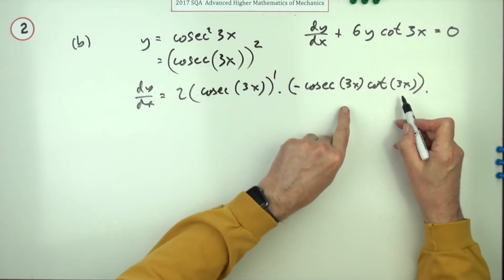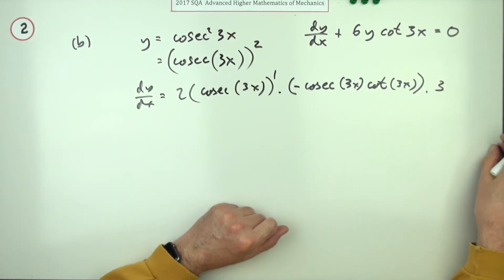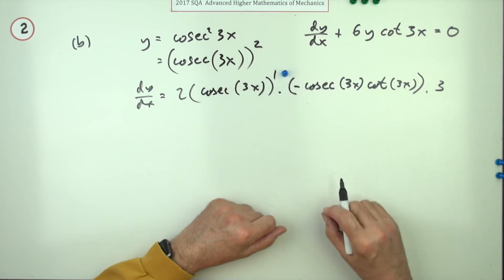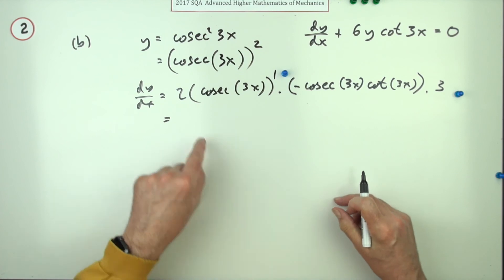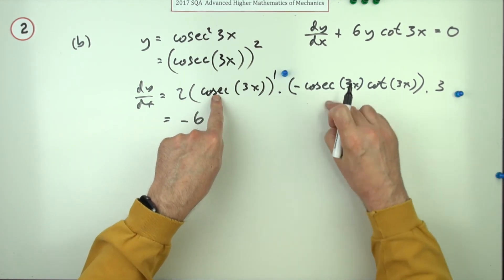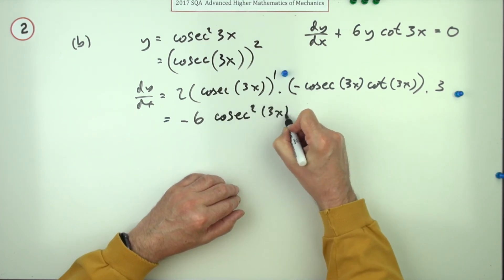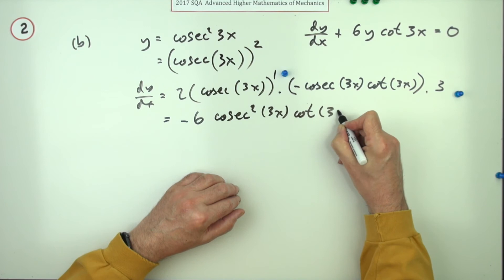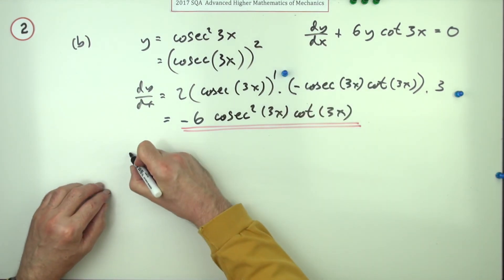Now look inside again, what's the derivative of 3x? That's 3. There was two marks here, one for starting it off, doing the first link in the chain if you like, and one for finishing it. But it'll need tidied up though won't it? You've got 2 times 3 and it's negative, is negative 6. You've got a cosec times a cosec so that's cosec squared 3x cot 3x, just finish that first bit off.